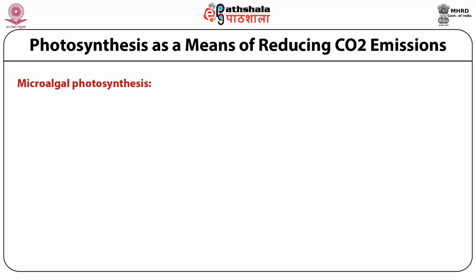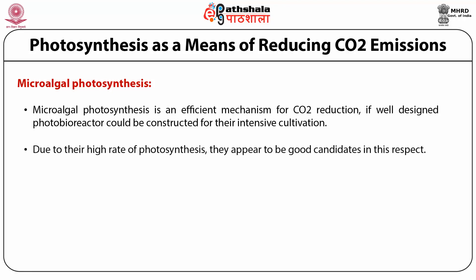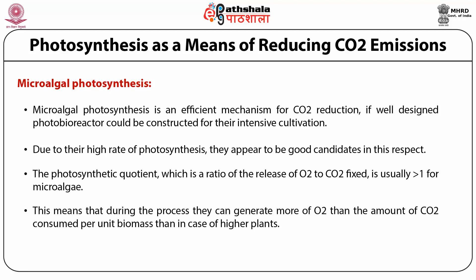Microalgal photosynthesis is an efficient mechanism for carbon dioxide reduction. If well designed, photobioreactors could be constructed for their intensive cultivation. Due to their high rate of photosynthesis, they appear to be good candidates. The photosynthetic quotient — the ratio of oxygen released to carbon dioxide consumed — is usually less than one for microalgae, meaning they generate more oxygen than carbon dioxide consumed per unit biomass compared to higher plants. Moreover, microalgae offer economies of scale as they can be grown by volume instead of area.